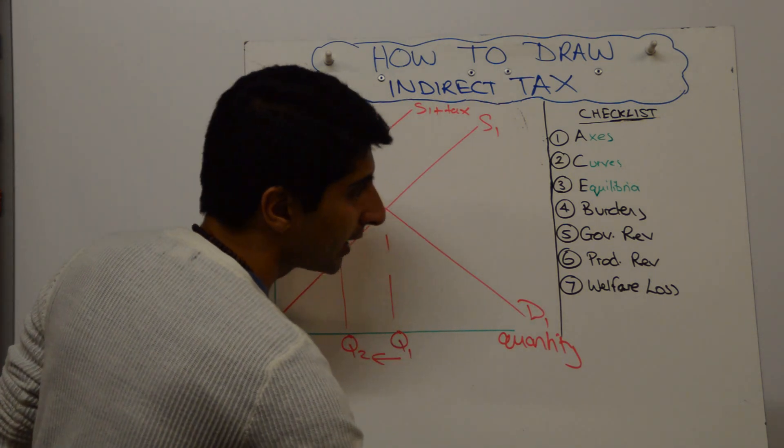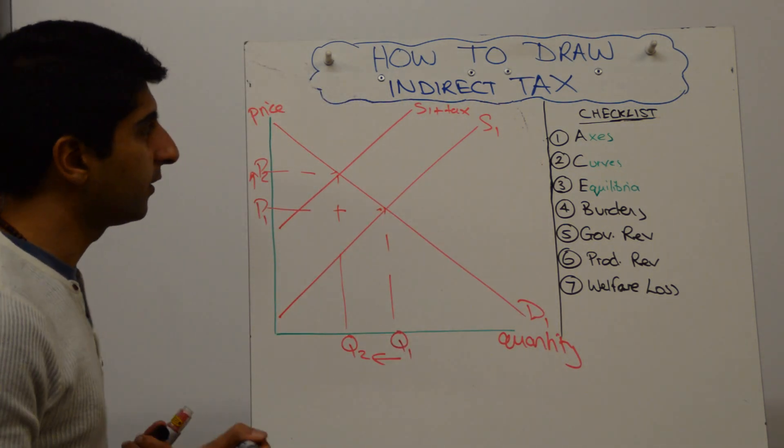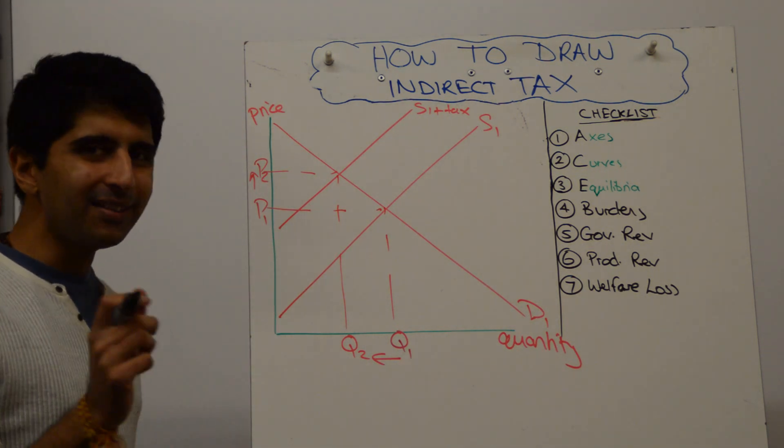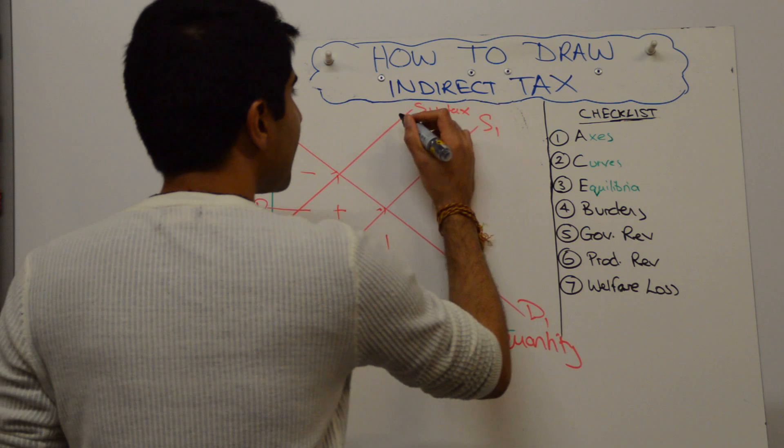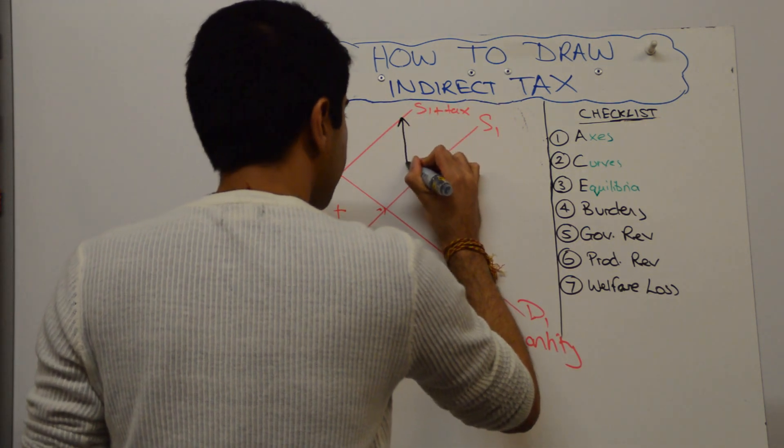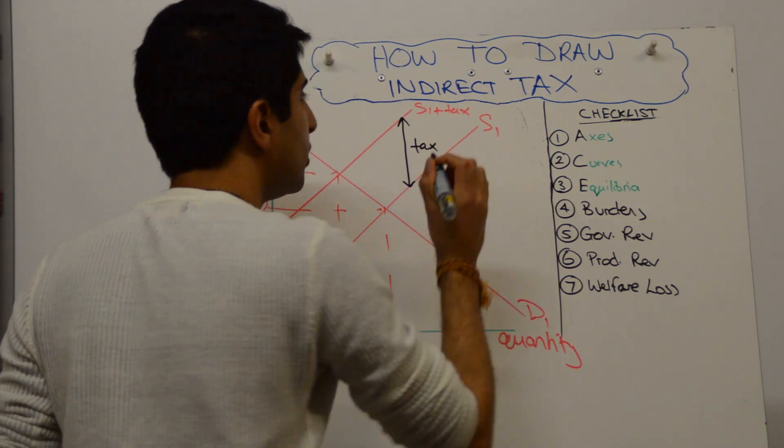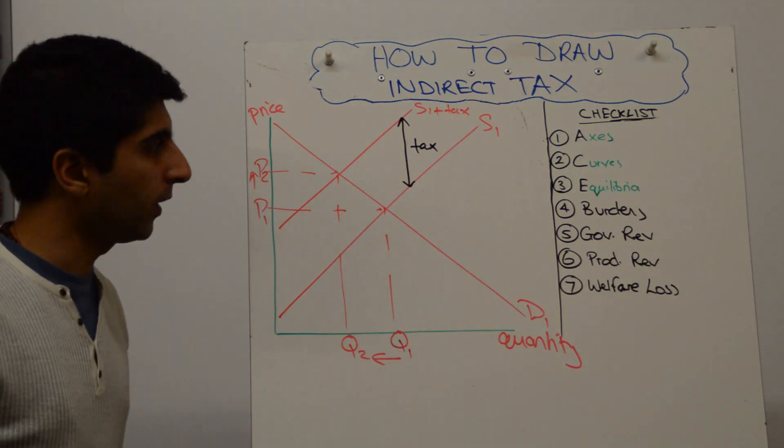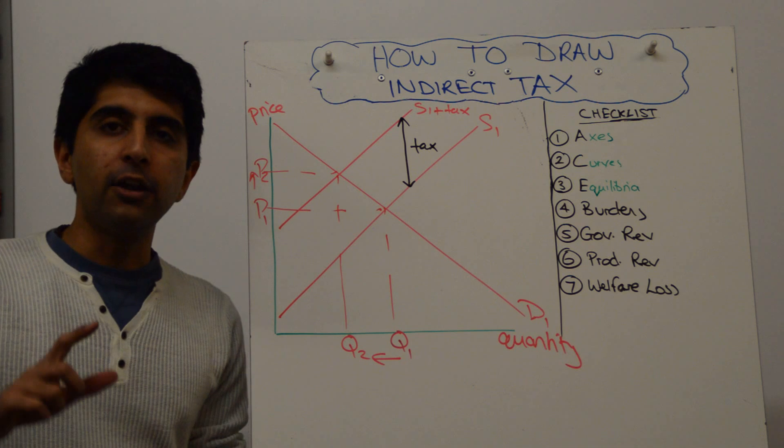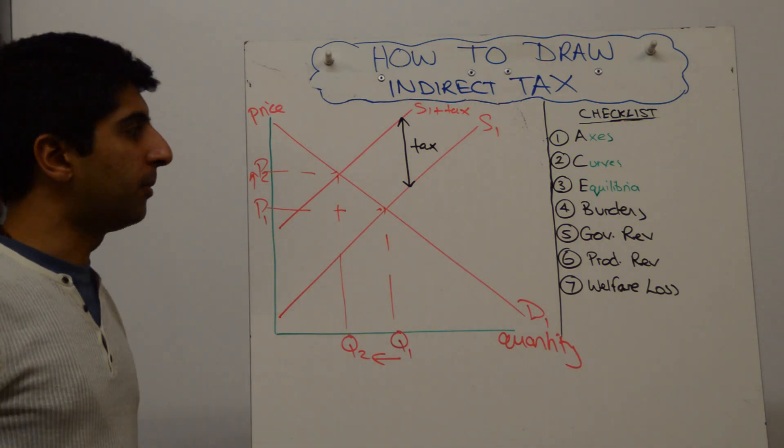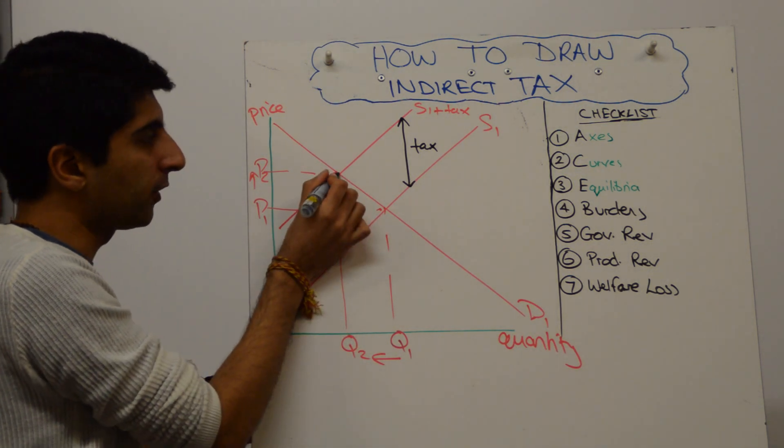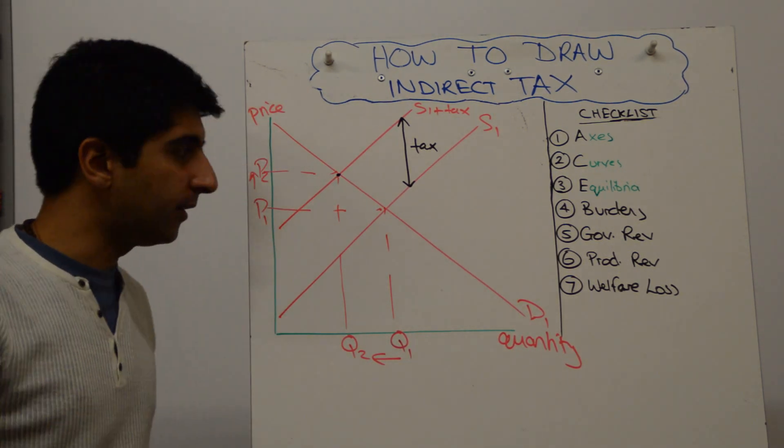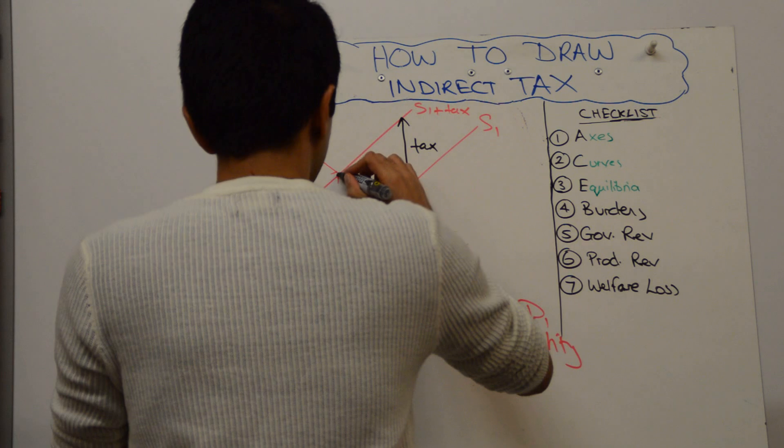Well, let's start by looking at government revenue. Number five first. What we want to show is the value of the tax. Let's stick that on the diagram first to help us. The value of the tax is the vertical distance between the two supply curves. That's worth just sticking on. That's going to help us get to this government revenue.